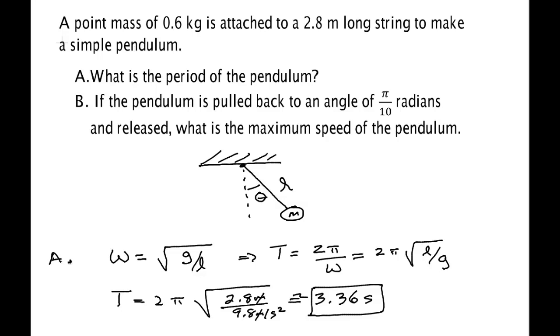Part B asks if the pendulum is pulled back to an angle of π/10 radians and released, what is the maximum speed of the pendulum? Now this can be solved by energy analysis.